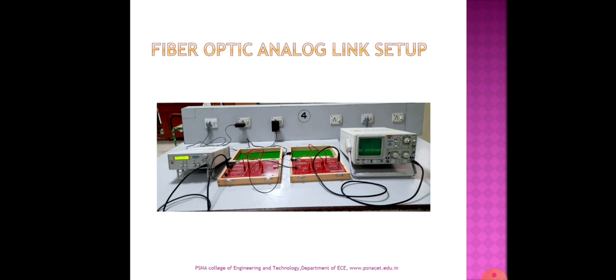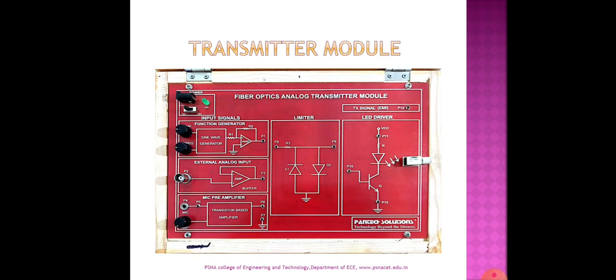The connection on the board goes from the function generator to the transmitter module and through the optical fiber, then from the receiver module to the CRO. The transmitter module consists of a function generator circuit and an external analog input. The inbuilt analog signal can be taken from the function generator, or an external analog signal can be provided to study the bandwidth. A limiter circuit is included for limiting purposes, and its output is given to the LED driver circuit, which connects to the LED transmitter output.